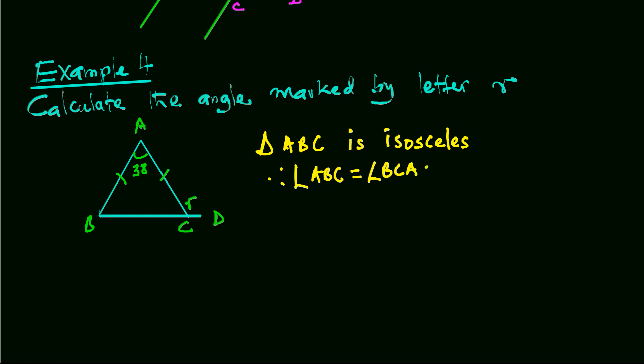That is half of 180 degrees minus 38 degrees, which gives us 71 degrees. The base angles of an isosceles triangle are equal. Therefore, R equals 38 degrees plus 71 degrees, giving us 109 degrees. We use the property that the sum of two interior angles equals the exterior angle.